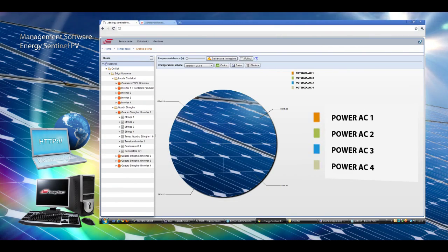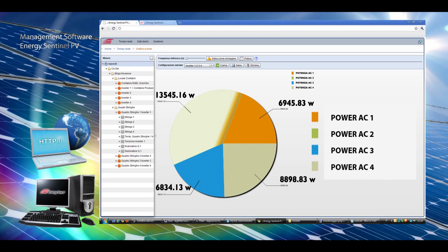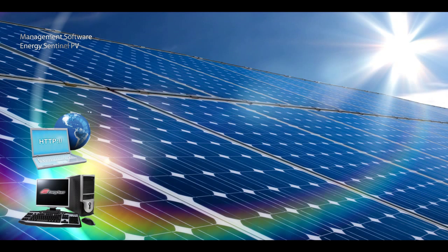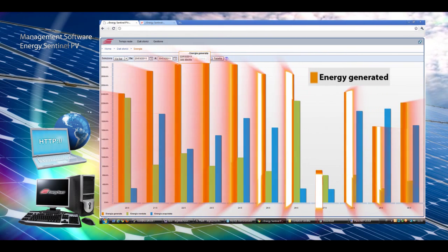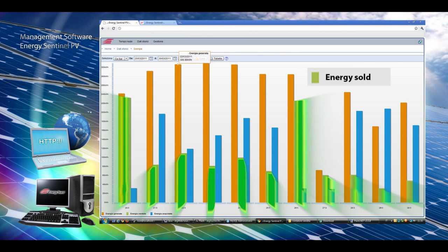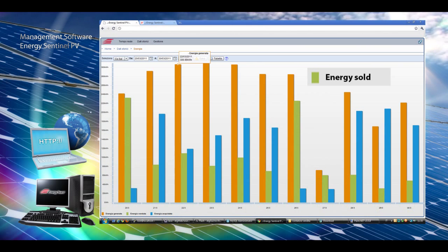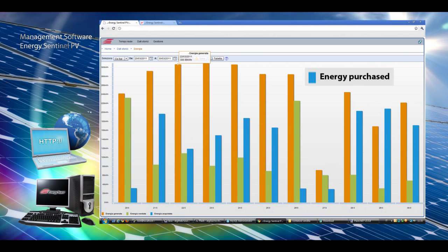Here you can see the same data as previous, but now they are expressed in real time. By selecting the opposite icon and the interested time interval, it's possible to get the energy balance for a plant by using the values of produced, sold and purchased energy acquired by Energy Sentinel PV.